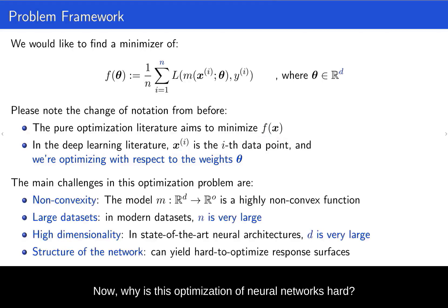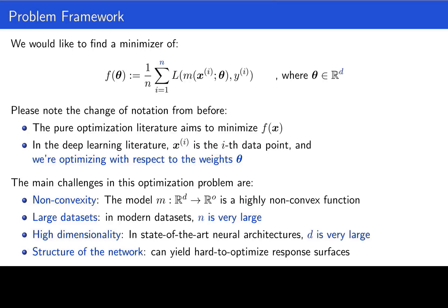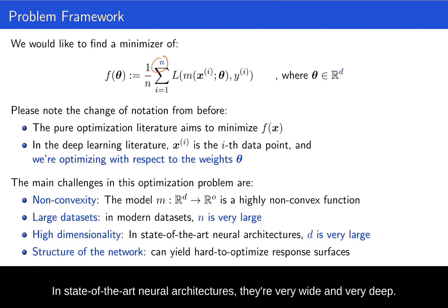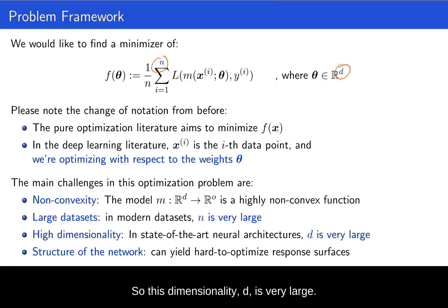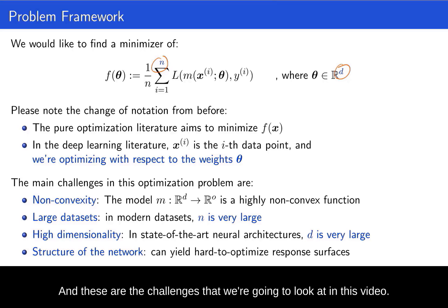Why is this optimization of neural networks hard? First of all, there is a lot of non-convexity — the model that we are fitting is a highly non-convex function of the parameters. Secondly, our data sets are large, so we have a lot of data points; little n is large. And the problem is very high dimensional — state-of-the-art neural architectures are very wide and very deep, so dimensionality d is very large. Finally, the structure of the neural network can yield a very hard-to-optimize response surface. These are the challenges we'll look at in this video.